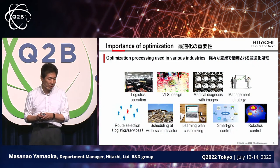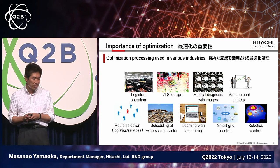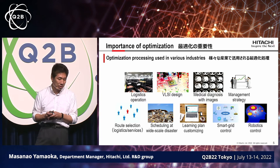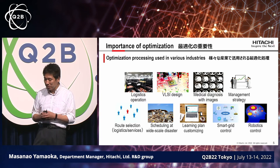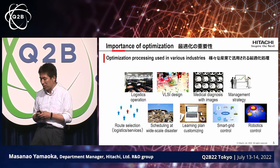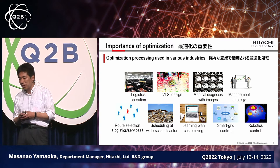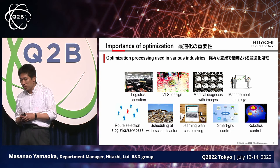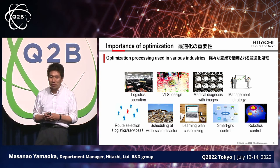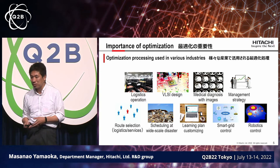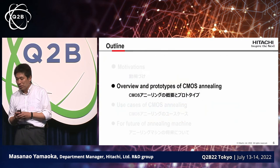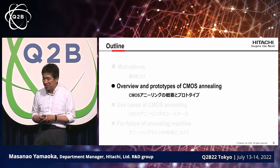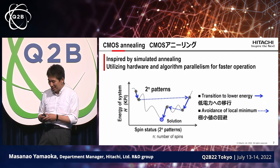We are developing various technologies, and one of them is optimization — we think that is quite important, as others have said. Optimization is being used in various fields: logistics, medicine, management decisions — a wide range of fields. Accelerating optimization is going to be key to realizing social innovation, and from there we have focused on CMOS annealing.